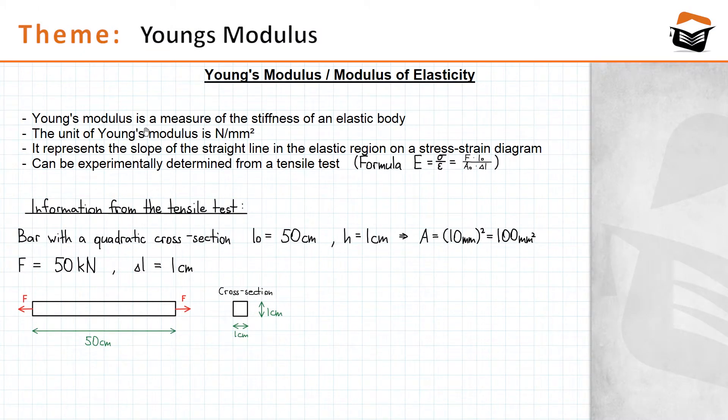Young's modulus is basically a measure of the stiffness of an elastic body. The higher the value of Young's modulus, the more stiff the body becomes, or you could say the higher the Young's modulus, the less elastic the body gets.